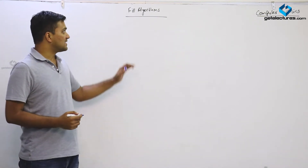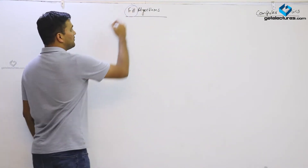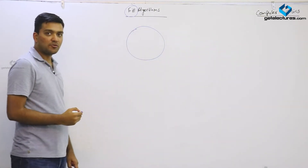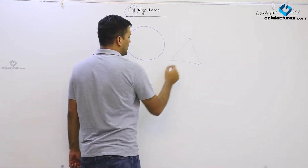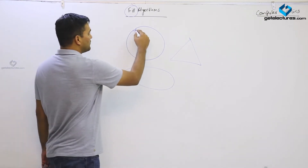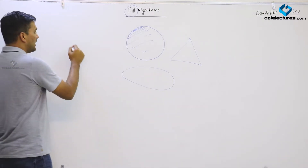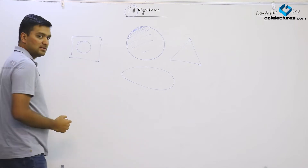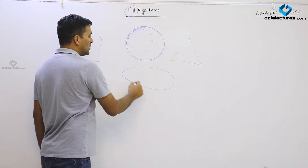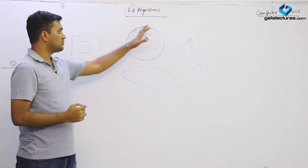Welcome students. Today we will be discussing fill algorithms. First, let us understand what the term 'fill' means. Whenever we draw a circle, ellipse, triangle, or any polygon, we have to fill it also. Whenever we see any object on our screen, it is mainly filled. Till now we have only seen algorithms to draw the boundary of polygons, circles, and ellipses. Now we have to study the algorithms to fill them.